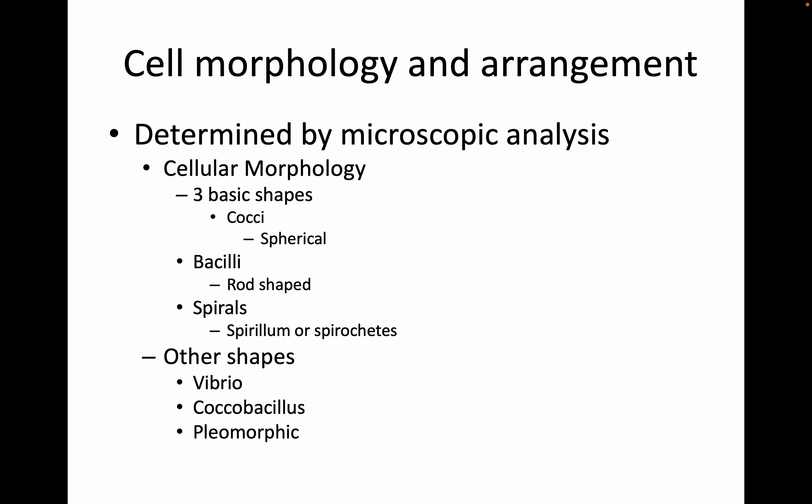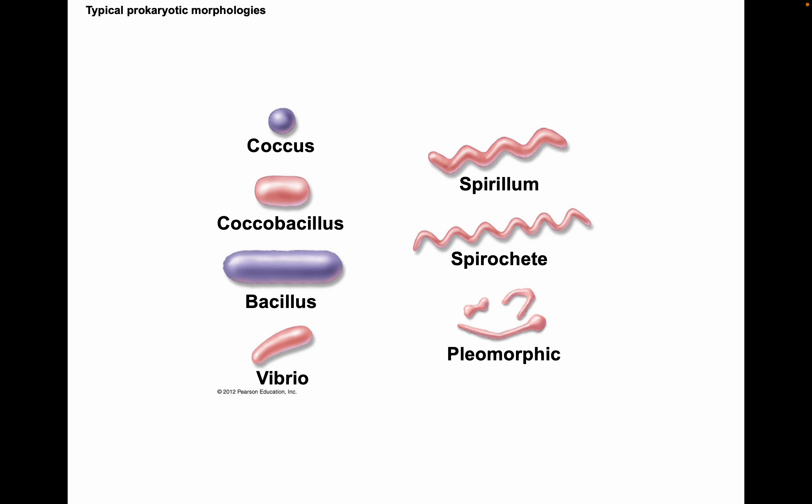Cell morphology and arrangement are determined usually by microscopic analysis. Cellular morphology — the shape of the cells — comes in three basic shapes: cocci, which are spherical; bacilli, which are rod-shaped; and spirals, like spirillum or spirochetes. There are some other shapes as well, like vibrio, coccobacillus, and pleomorphic, but they're much less common.